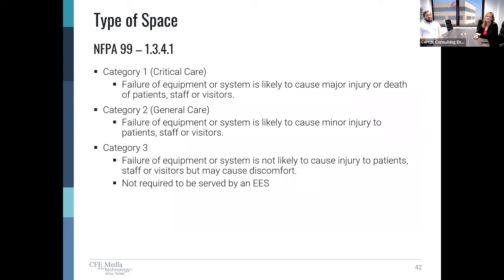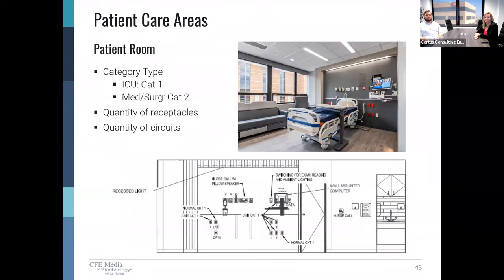Before we talk about specific room types, first we need to determine what type of spaces there are. NFPA 99 Section 1.3.4.1 defines three different categories. Category one is critical care, where failure of equipment or a system is likely to cause major injury or death of patient, staff, or visitors. Category two is general care, where failure is likely to cause minor injury. Category three is where failure is not likely to cause injury but may cause discomfort — and category three is not required to be served by an EES. We have both types in our new patient tower: intensive care rooms and med-surg rooms. Our client asked us to design these as acuity adaptable rooms, so even our category two rooms will want to follow the requirements of category one.